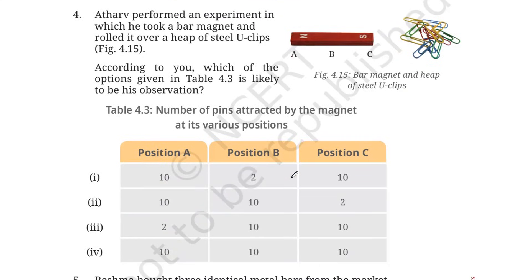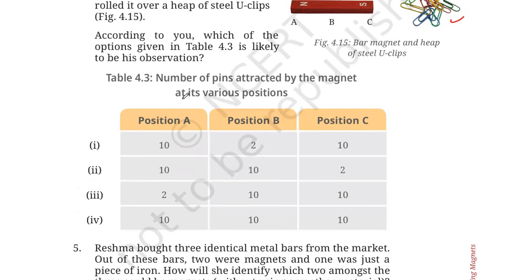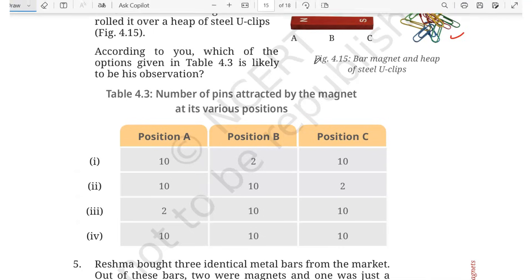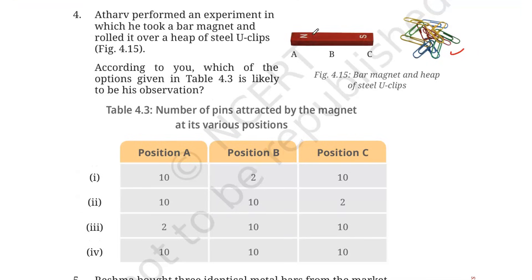Number 4. Arthur performed an experiment in which he took a bar magnet and rolled it over a heap of steel U-clips. According to you, which of the following options in the table 4.3 is likely to be his observation? Let us see: if position A will have 10 clips, position B will have 2 clips and position C will have 10 clips. To understand or crack the answer, first need to analyze the situation. We know that most of the clips will go towards the pole of the magnet. Most of them, maximum number of them will be at the pole and very few will be at the middle. Position B will have the minimum number of clips.